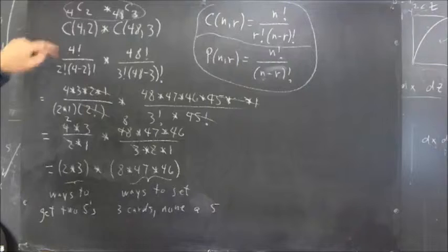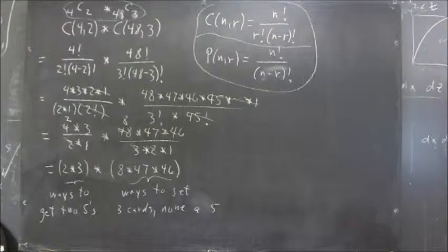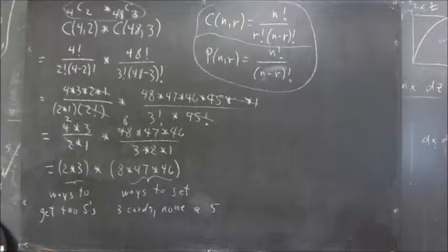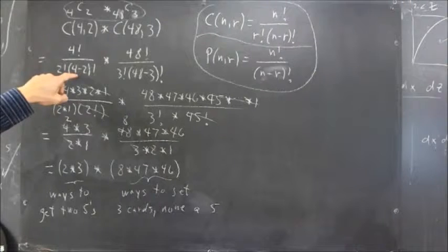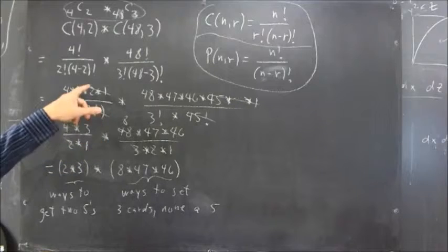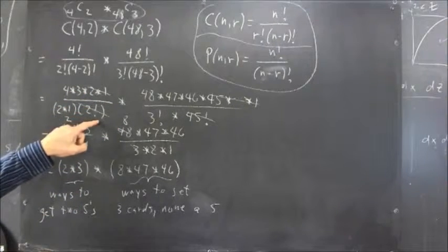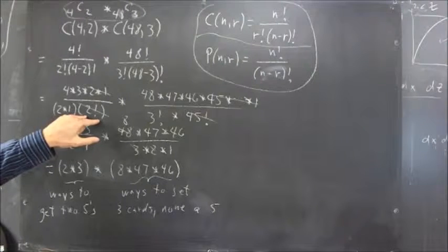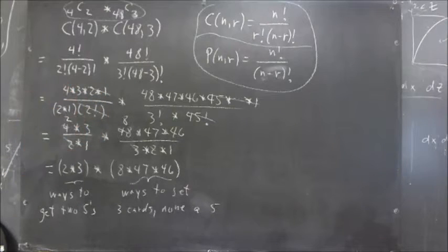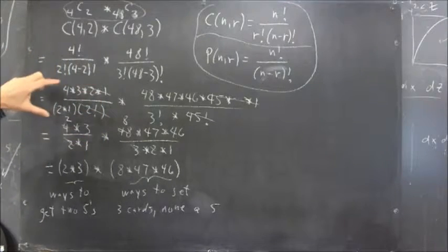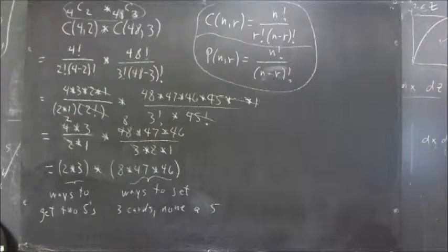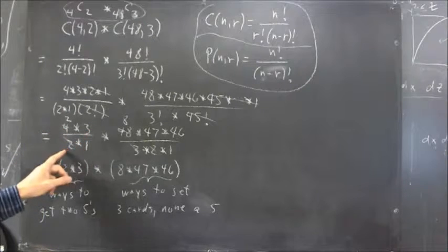4 factorial is 4 times 3 times 2 times 1. 2 factorial is 2 times 1. 4 minus 2 is 2. So, the 4 minus 2 factorial is 2 factorial. I've crossed out the 2 factorial with 2 times 1 because 2 factorial is 2 times 1. So, the 2 factorial here will divide into the 2 times 1 here and leave nothing. We get 1 and that's not going to make a difference in a multiplication. So, we end up with 4 times 3 over 2 times 1.